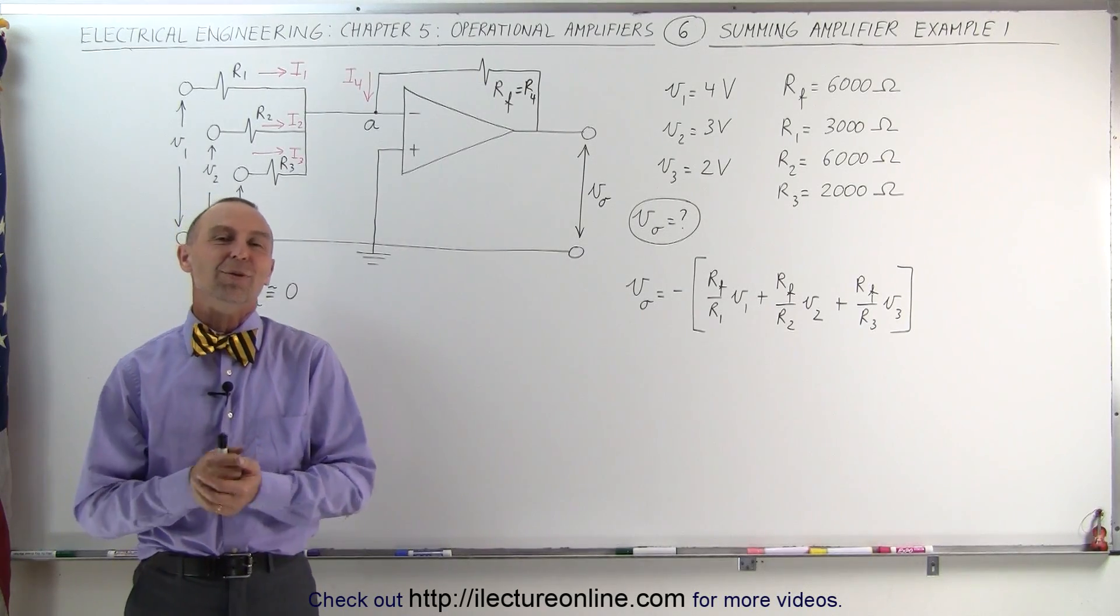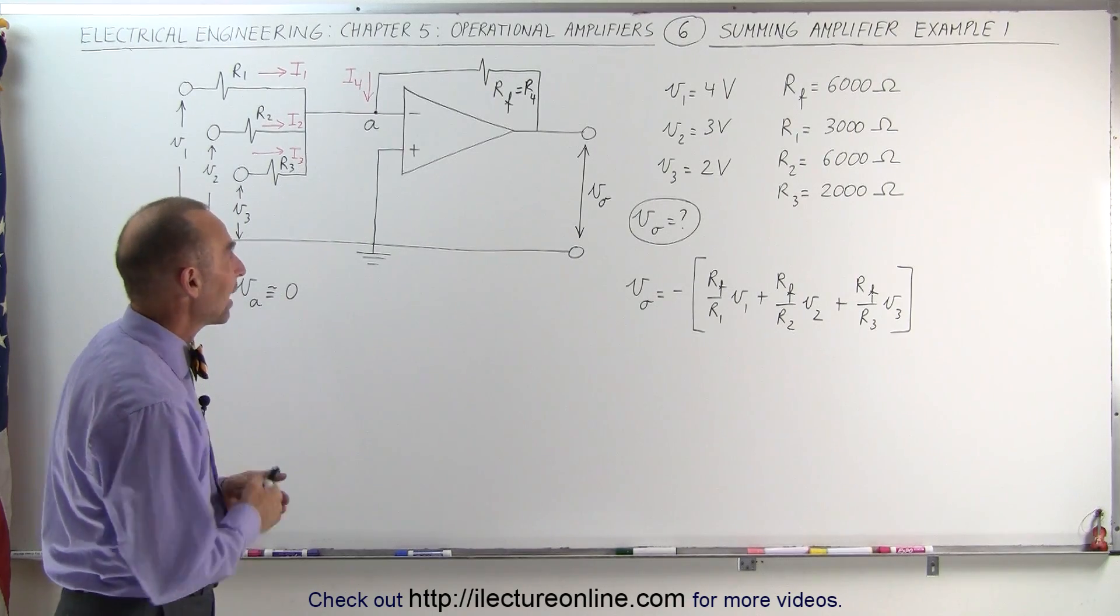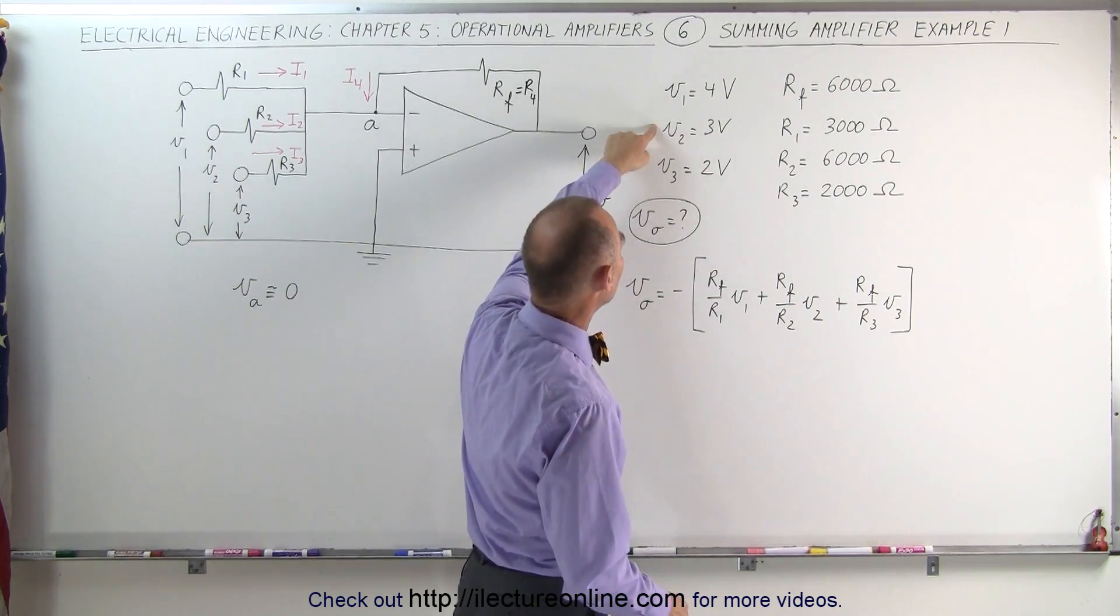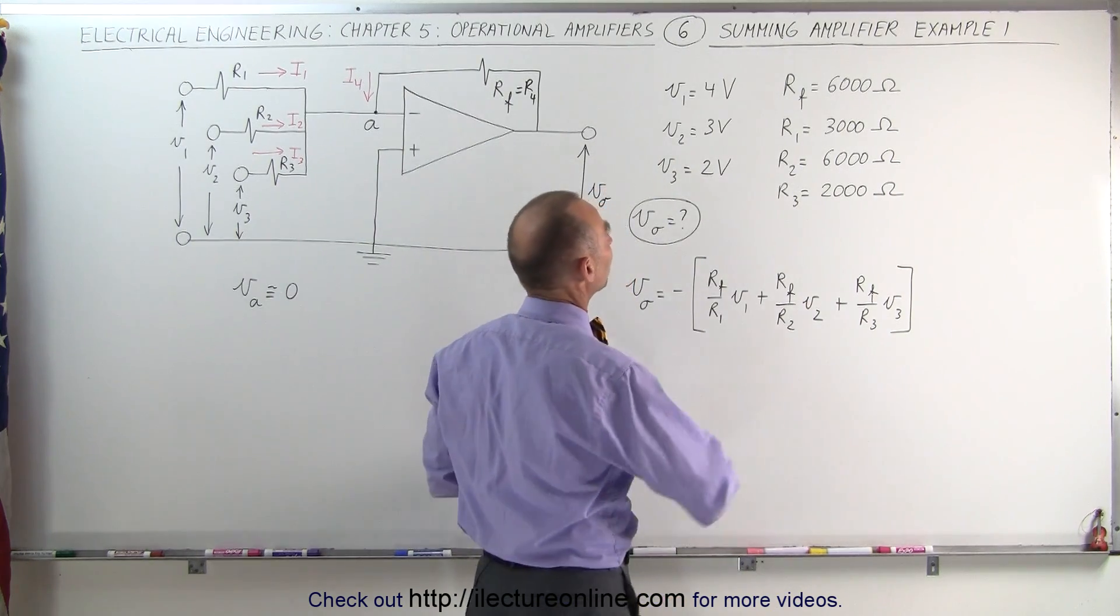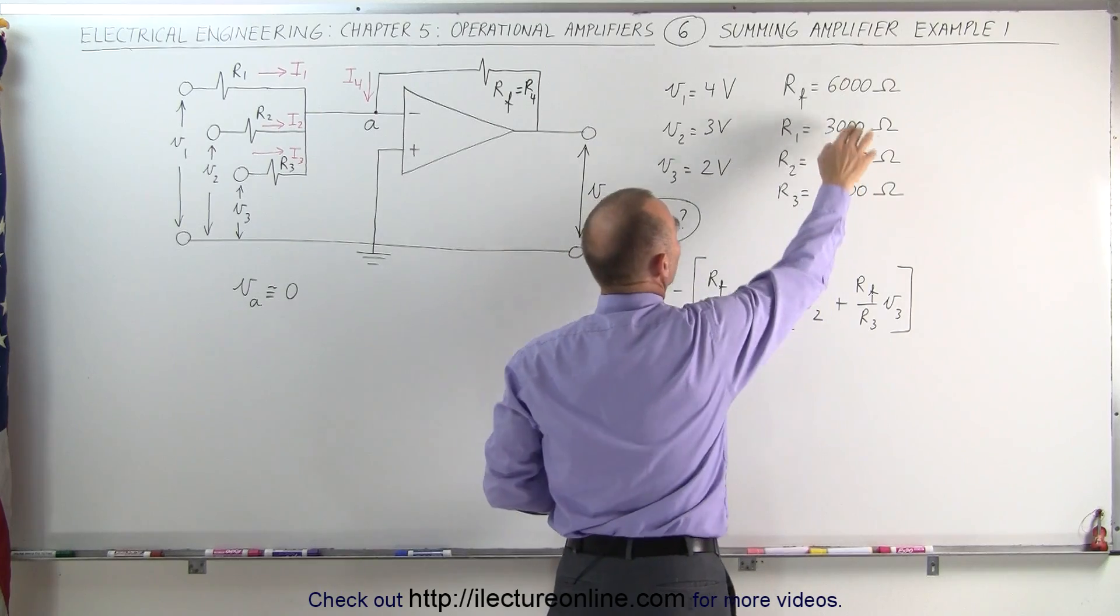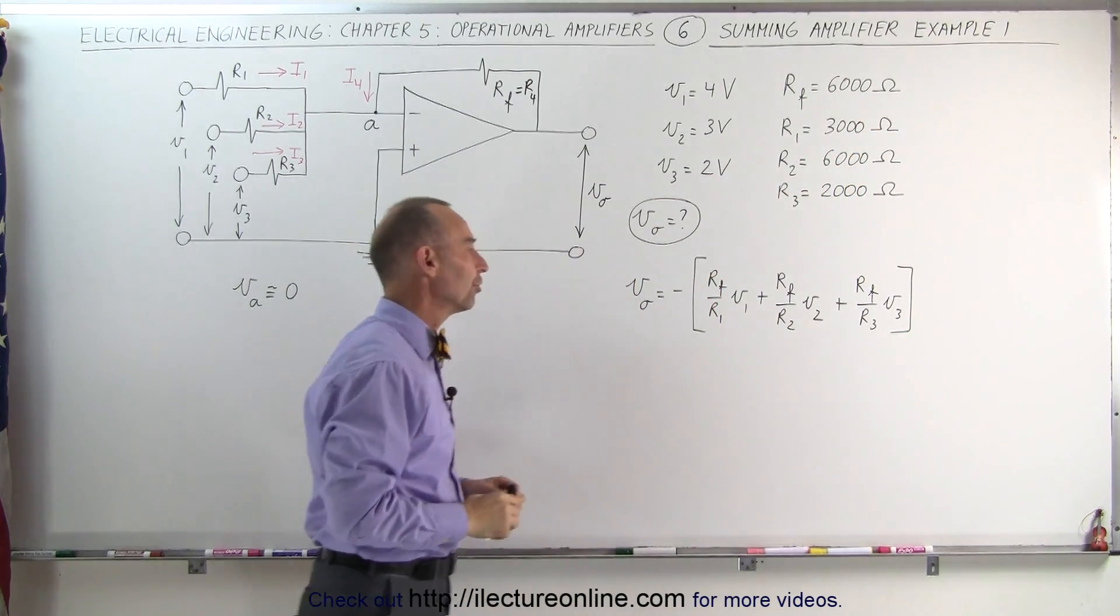Welcome to Electron Online. Let's do a simple example of how to use a summing amplifier. We have three input signals, three input voltages: four volts, three volts, and two volts with accompanying resistances 3,000 ohms, 6,000 ohms, and 2,000 ohms. The feedback resistor is 6,000 ohms, and we're trying to find the output voltage.